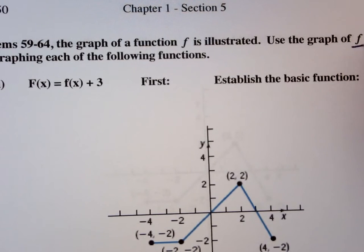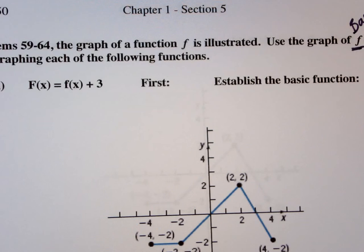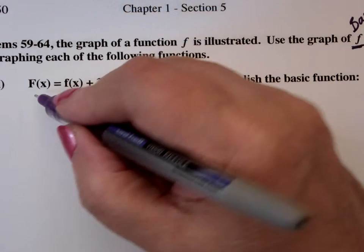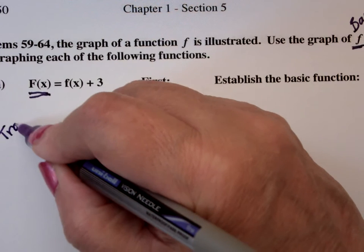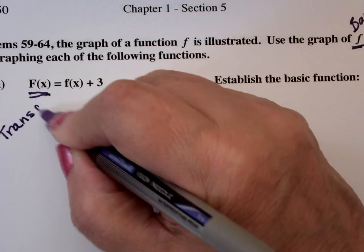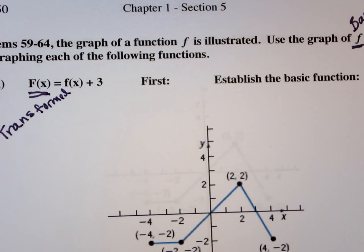f of x is going to be our basic function. So little f is the basic. And then big F is the transformation, or the transformed function. That's the one I want to graph.